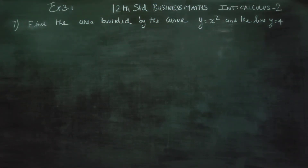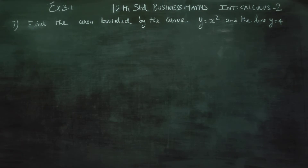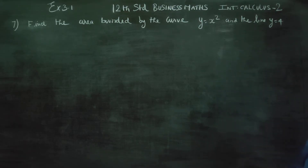Dear 12th standard business math students, I am Metro Karanagaran. In exercise number 3.1, sum number 7, find the area bounded by the curve y is equal to x square and the line y is equal to 4.